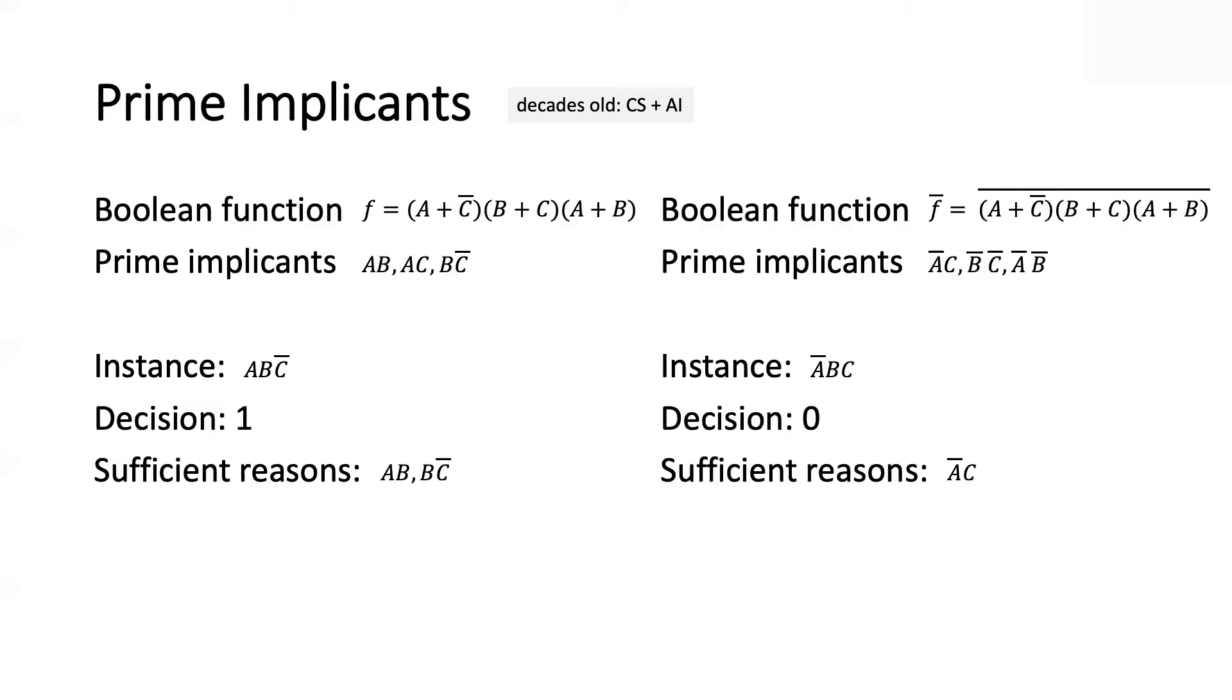Now, if you have a negative decision, you do the same thing, but you have to work with the complement of that particular function. Now, as some of you may know, one of the issues with prime implicants is there could be an exponential number of them, and that would pose a problem for certain kind of queries like the one I'm going to be showing you next, which require us to actually use the notion of a complete reason.